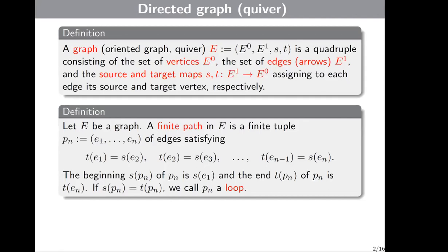Now we can define the beginning and end of the path. The beginning of path P_n, written s(P_n), is equal to the source of the first edge e_1. The end of the path, t(P_n), is equal to the target of the last edge e_n. If the beginning of the path equals the end of the path, we call the path a loop.